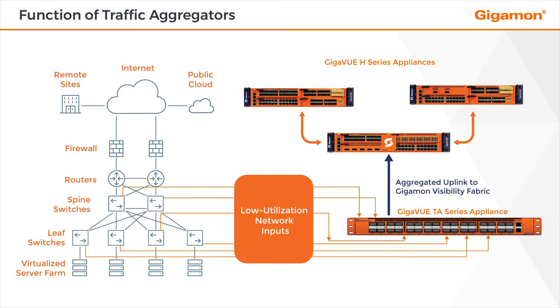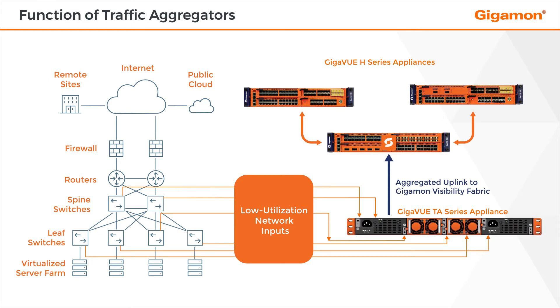Gigaview TA Series appliances come with a front-to-back airflow design, hot-swappable fans, and options for redundant power supplies.